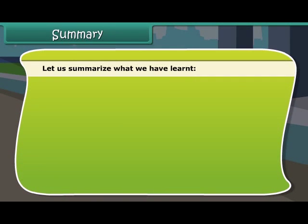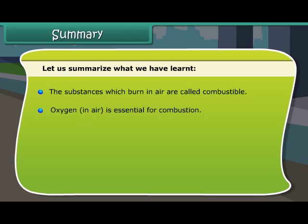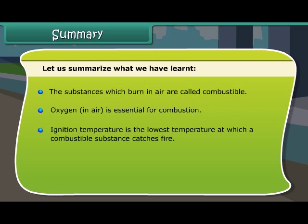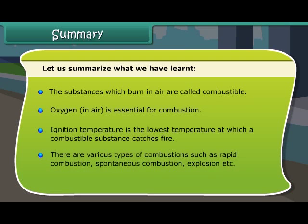Let us summarize what we have learned. Substances which burn in air are called combustible. Oxygen in air is essential for combustion. Ignition temperature is the lowest temperature at which a combustible substance catches fire. There are various types of combustion such as rapid combustion, spontaneous combustion, explosion, etc.